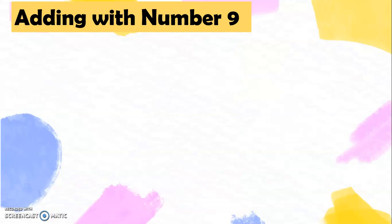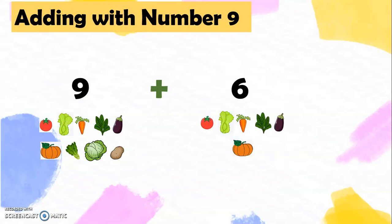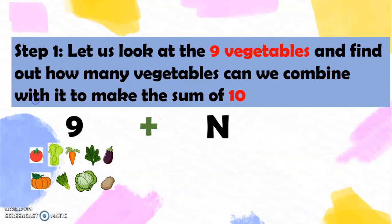Let's try adding with number 9. We have here 9, which is the number of vegetables that Gia picked, plus 6, which is the number of vegetables that Gio picked. So 9 plus 6 equals a number. To do adding with 9, let us look at the 9 vegetables and find out how many vegetables we can combine with it to make the sum of 10. So we have 9 plus a number equals 10.